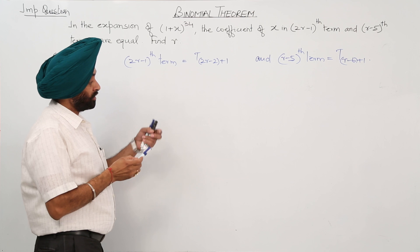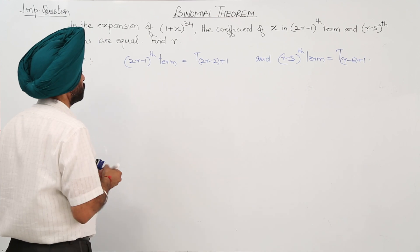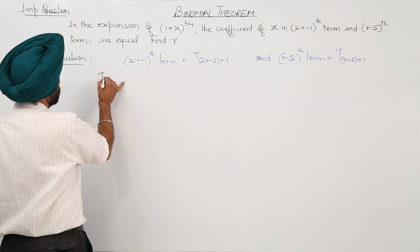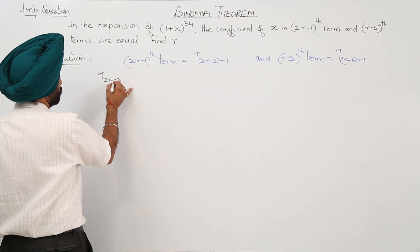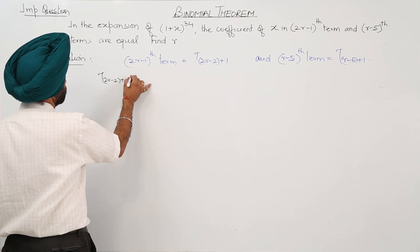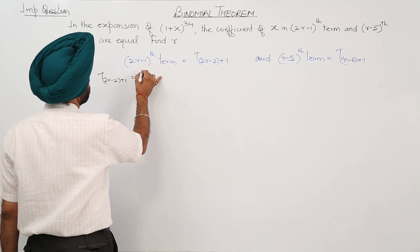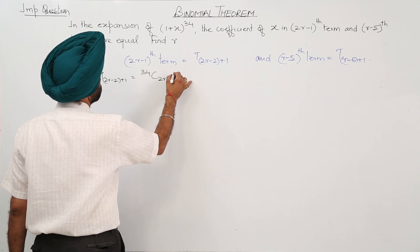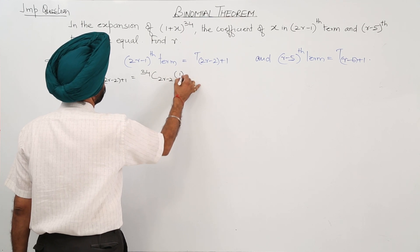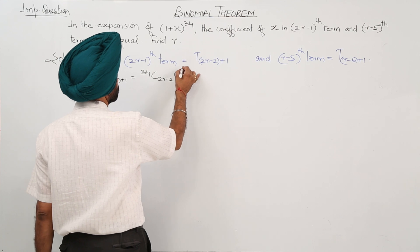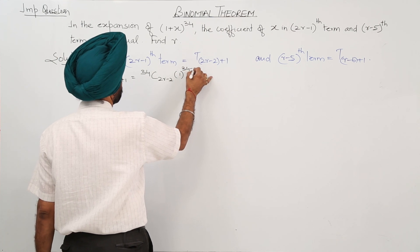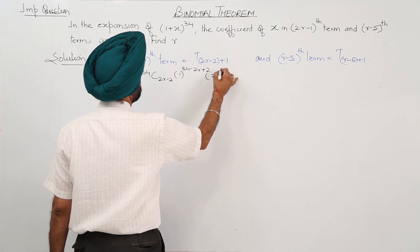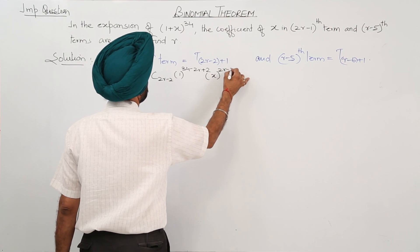T_{2r-2+1} equals 34C_{2r-2} times 1^{34-2r+2} times x^{2r-2}.